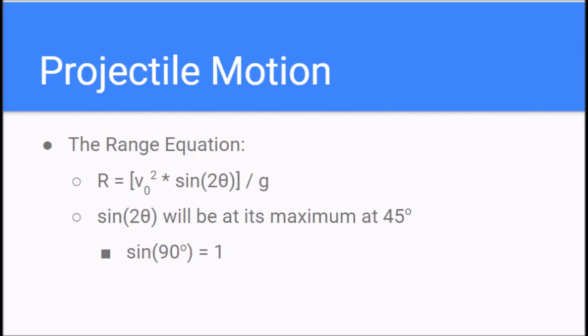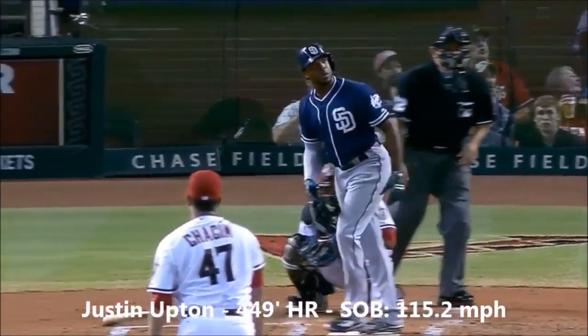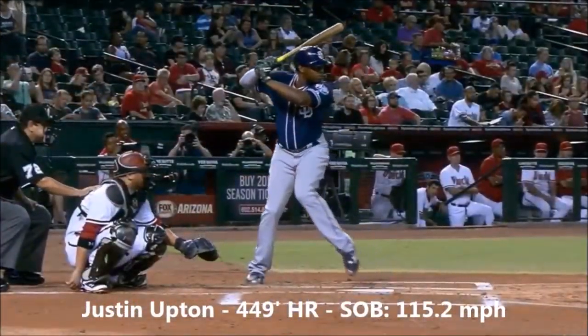An angle of 45 degrees above the horizontal will result in the greatest horizontal displacement, assuming velocity remains constant. Another demonstration of this is with Major League Baseball players hitting home runs and line drives.